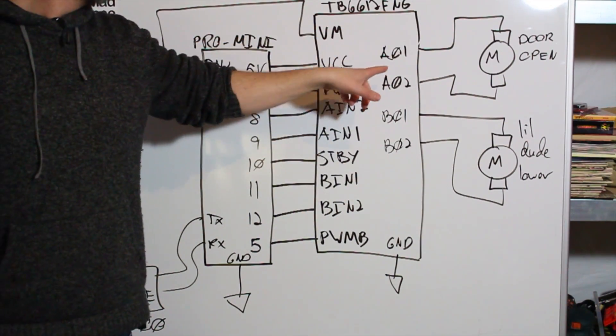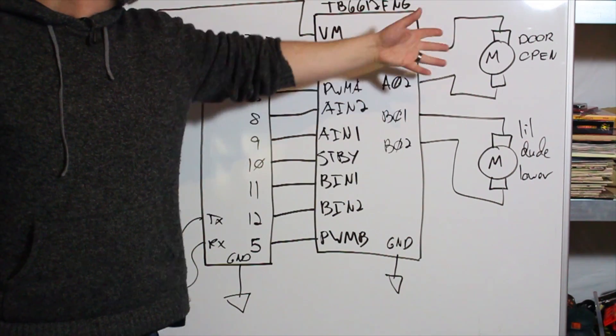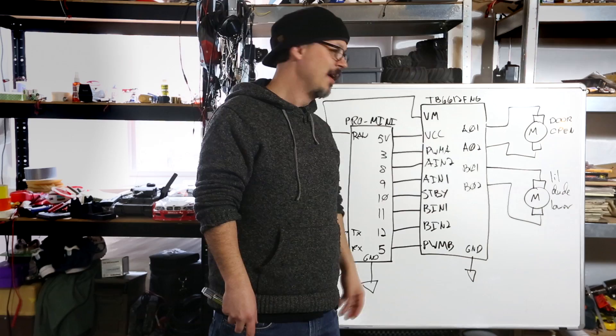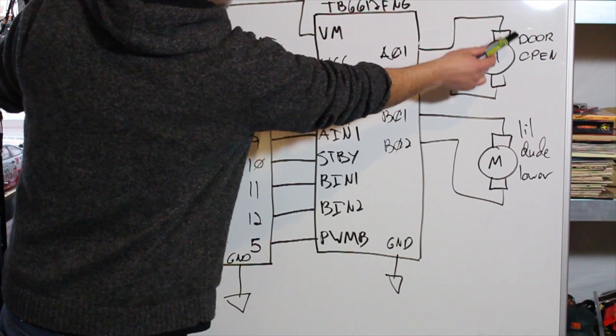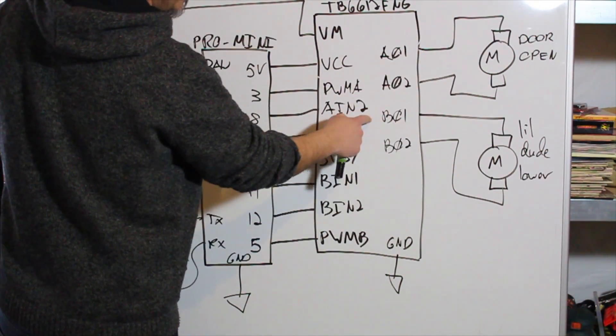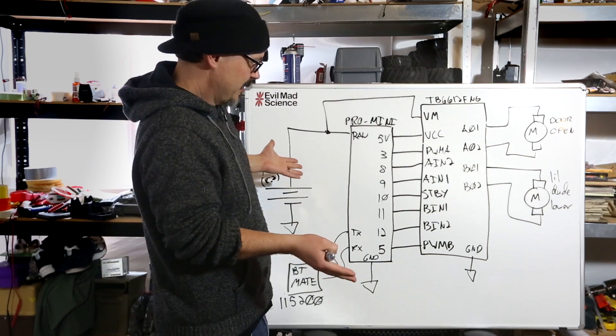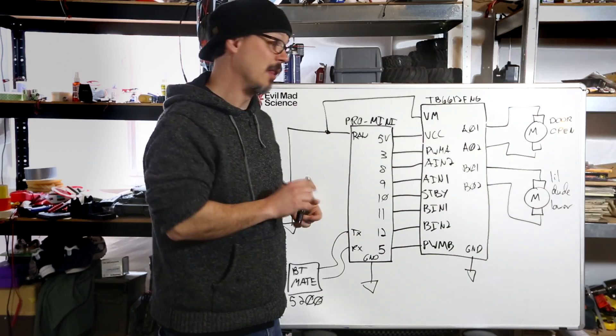So here's all my inputs here. Now I got to do A01, A02. And I'm pretty sure that's a typo. It's probably AO for out. These go to the door open motor. That'll drive that. And B01 and B02 drive little dude motor. That's the whole schematic. This thing is pretty simple.